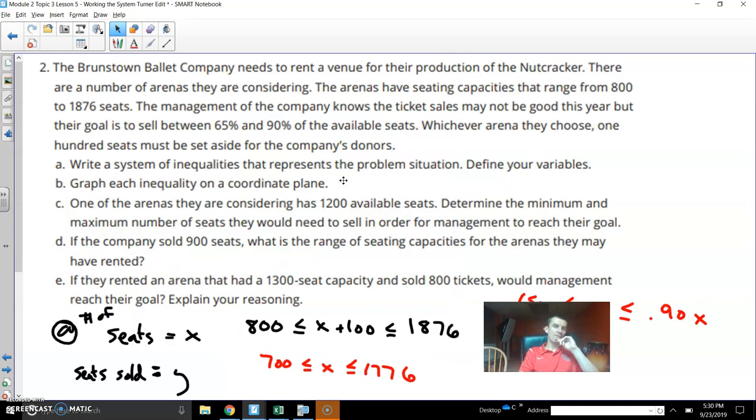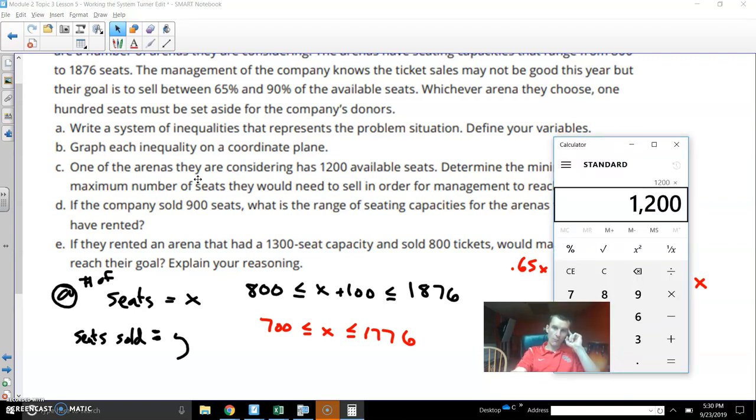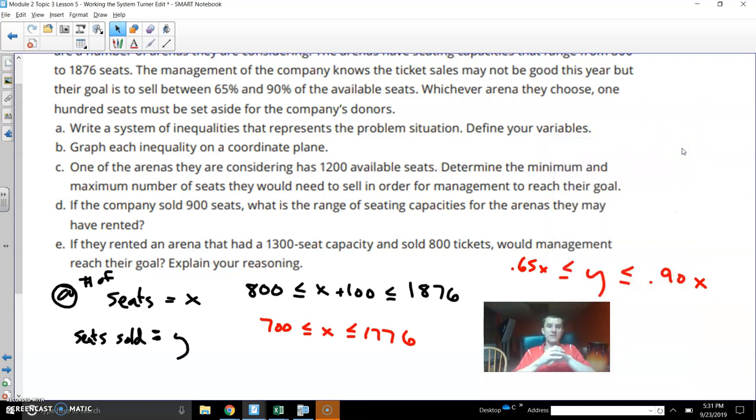So now it says if the company, one of the arenas they're considering has 1200 seats, determine the minimum and maximum number of seats they would need to sell in order for management to reach their goal. So if we said, well, if you had 1200 available seats, let's take 1200 on the calculator, 1200, and let's multiply that by 0.65. So it looks like 780 on the bottom end. And if I multiply 1200 times 0.9, that gives us 1080. So they need to sell between those two values in order for management to reach their goal.